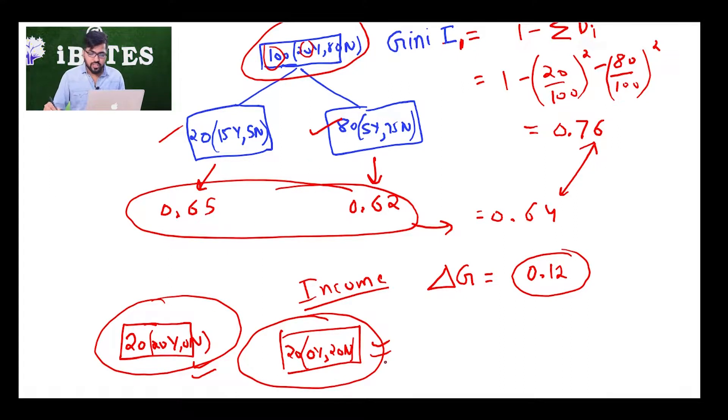For a pure node, my Gini index is going to be 1 minus 0 by 20 square minus 20 by 20 square, that is 0. So Gini index is going to be 0. So since pure node is the one where we want to reach, Gini index for pure node is 0. So lower the Gini index, better it is. So if we have 0 Gini index, that means we are having a pure node. What do we mean by pure node? By pure node we mean that we are making 0 training errors.